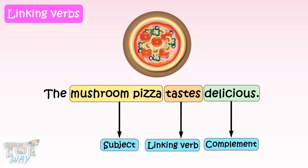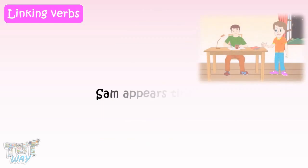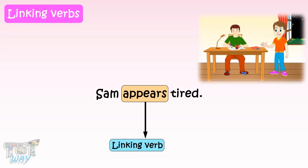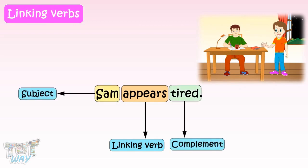Here is another example: 'Sam appears tired.' The verb 'appears' links the subject Sam to its complement 'tired,' so it's a linking verb.